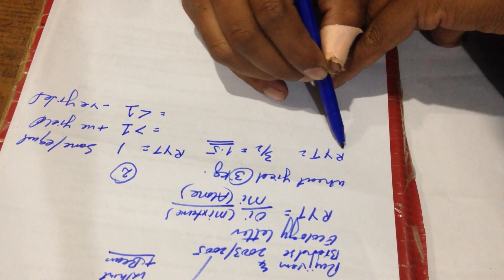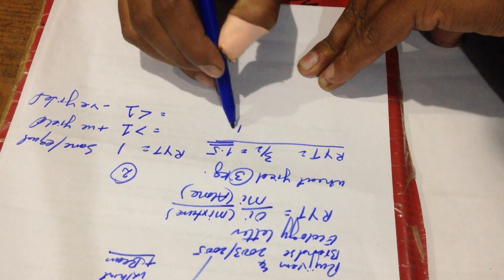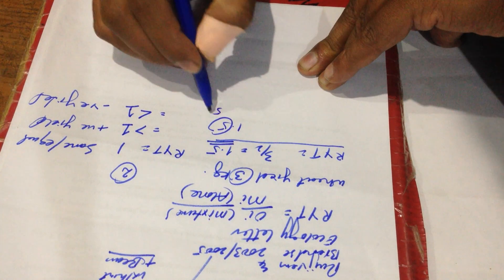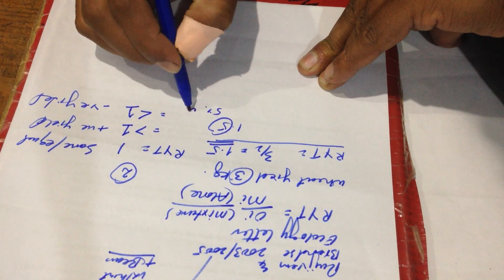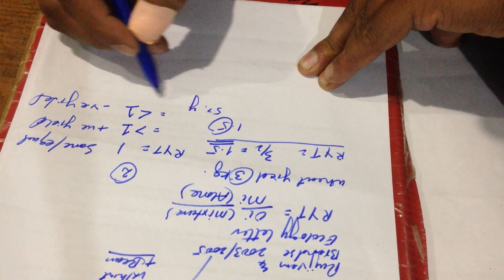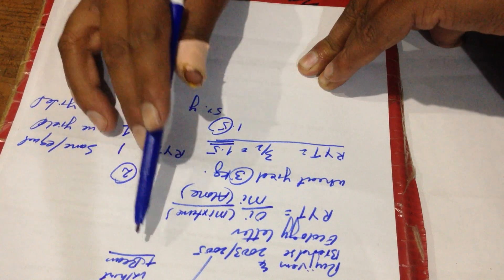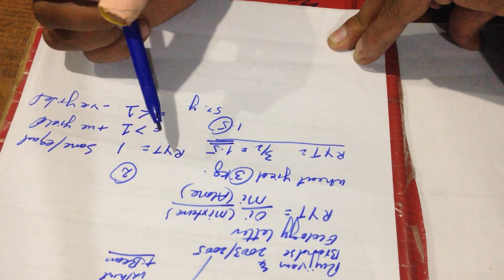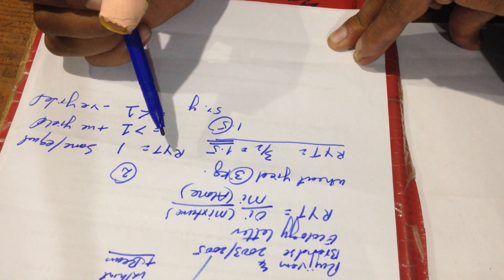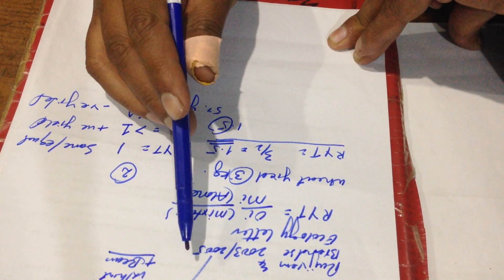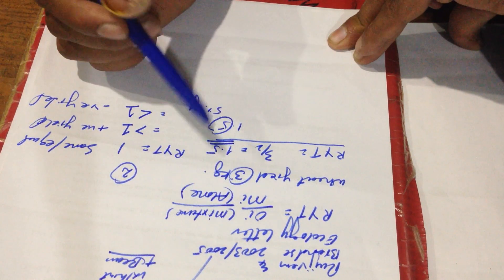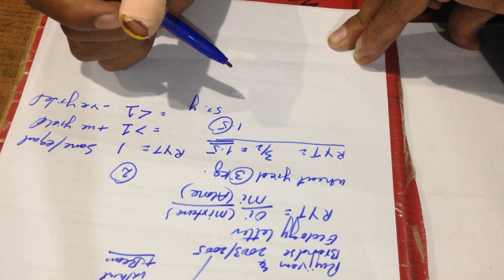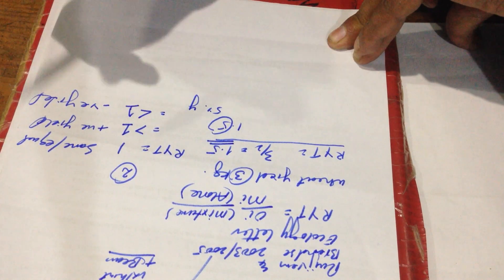In the example we have 1.5, which means 50 percent increase will be there in the intercropping system. This test or analysis is used for the comparison of intercropping system and the sole cropping system. In next videos we will discuss further in detail. Thank you.